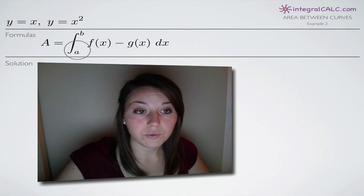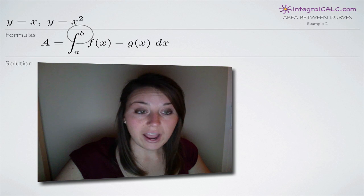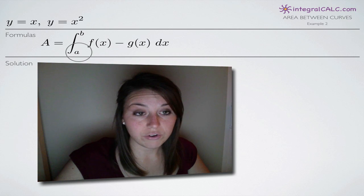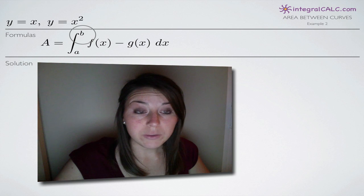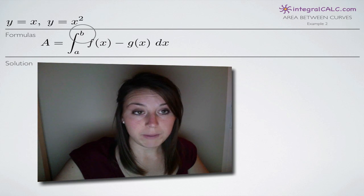The other thing you'll notice about this formula is that we're going to be integrating on the range a to b. Now, sometimes we're given our range or limits of integration a and b. In this particular case, we're not. So the first thing we have to do is find our limits of integration a and b.